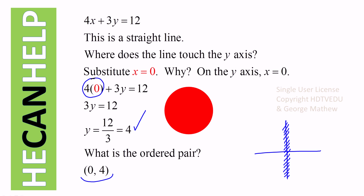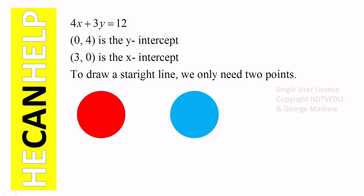Join those two points and we have the line for 4x plus 3y equals 12. The point (0, 4) is the y-intercept and (3, 0) is the x-intercept. To draw a straight line we only need two points, so we have the red point and the blue point.